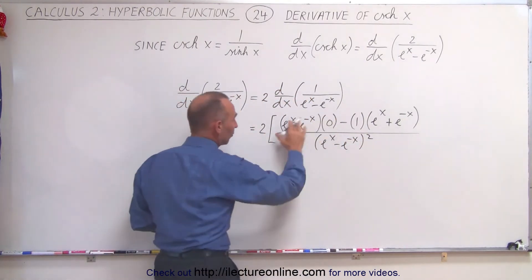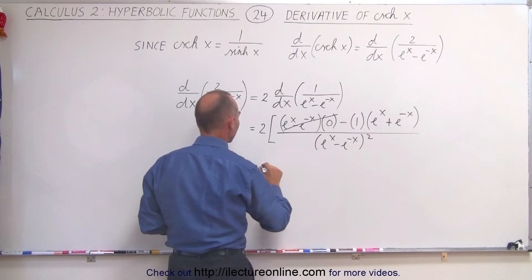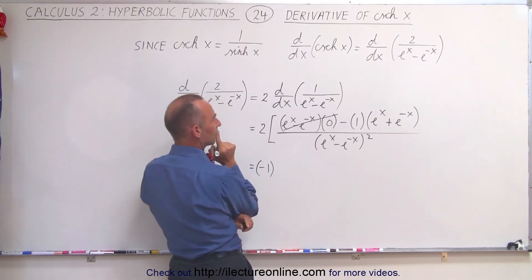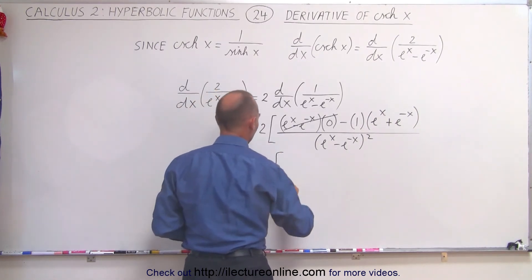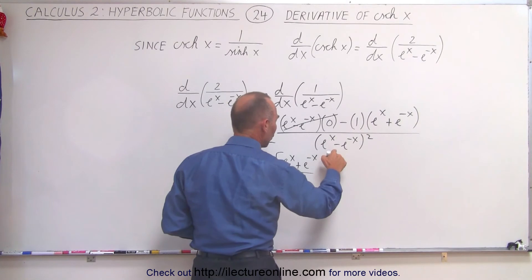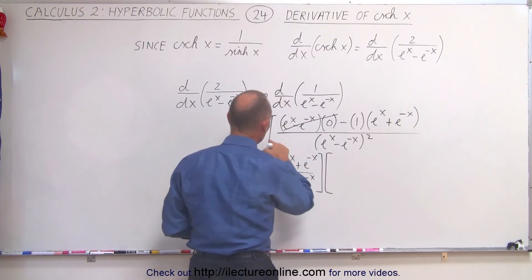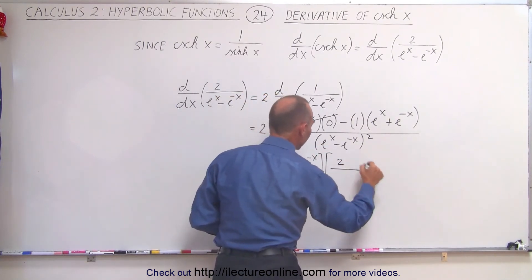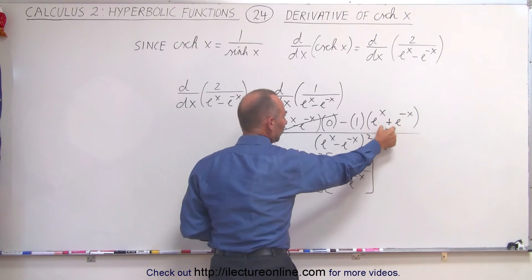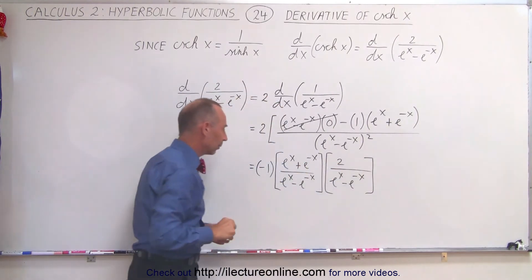You can see that this portion here goes to 0. We can take this negative sign and put it in front, so this can be written as negative 1 times — now I'm going to write this as follows: e to the x plus e to the minus x, divided by e to the x minus e to the minus x, and then the 2 divided by e to the x minus e to the minus x.